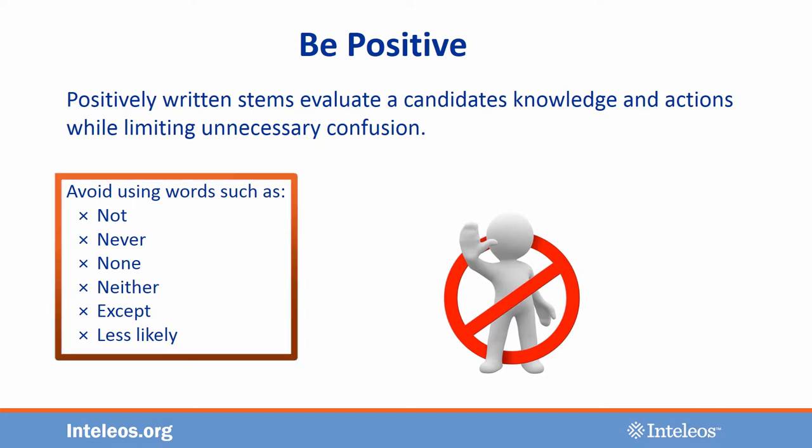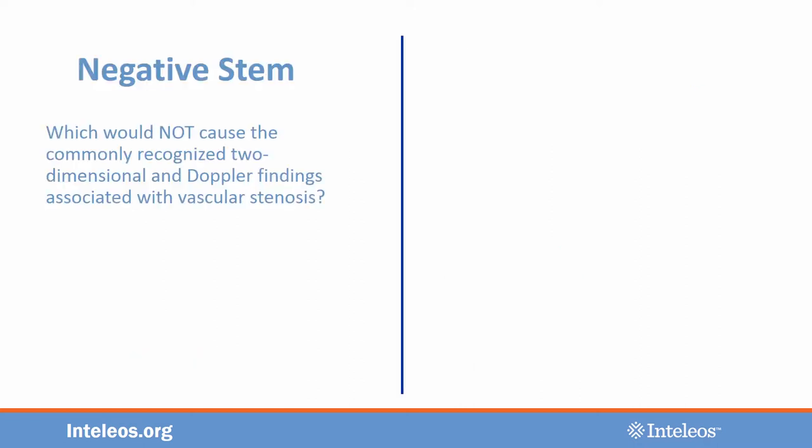A stem should be written as a positive expression. Using negative words like 'except' or 'not' creates confusion, as in: 'which would not cause the commonly recognized two-dimensional and Doppler findings associated with vascular stenosis?' Negative stems like this not only require the candidate to understand the content, but also require them to work through the negative to get to the correct answer. That is not the skill we are trying to assess. Furthermore, one would not be able to identify the correct answer without reading the response options.